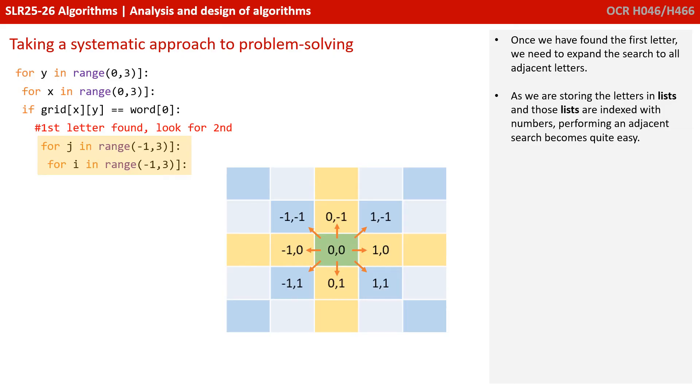So once we've found the first letter, we then need to expand our search to the adjacent letters. So we need to look at the one in the top left, we need to look at one above, the one in the top right, the one to the left, the one to the right, the one to the bottom left, the bottom and the bottom right.